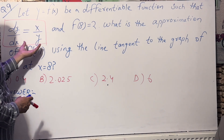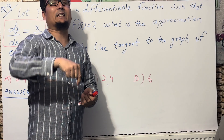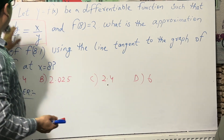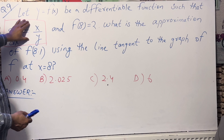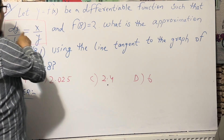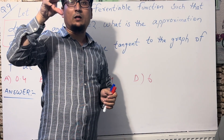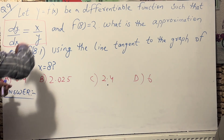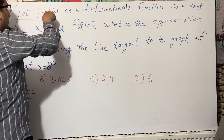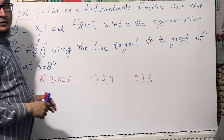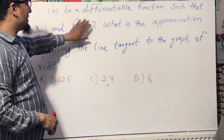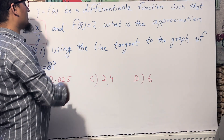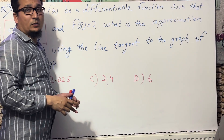So since dy/dx is given as x/y in terms of the function, from this differential equation we can find the equation — we can find the function. Additionally, a condition is given: when x = 8, the function equals 2. So the point (8, 2) is given, which allows us to find the function completely.